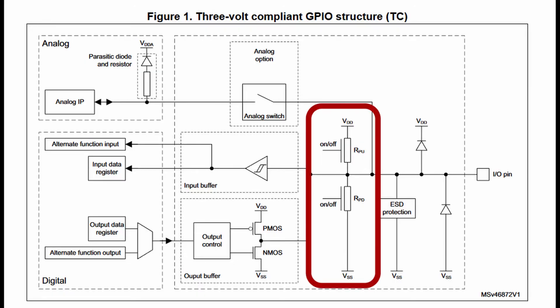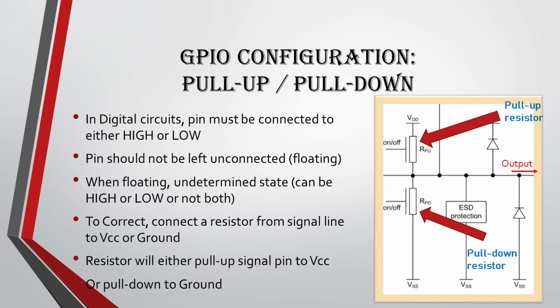Now we will focus on pull-up and pull-down. In digital circuits, a pin must be connected to either logic high or logic low — it should not be left unconnected, i.e. floating. When a pin is left floating, it can be in an undetermined state, either high or low. The floating pin can cause many problems. To correct this, connect a resistor from the signal line to VCC or ground. The resistor will either pull-up the signal to VCC or pull-down to ground. In ARM and other microcontrollers, there is built-in circuitry to do this, so you don't need any external components.